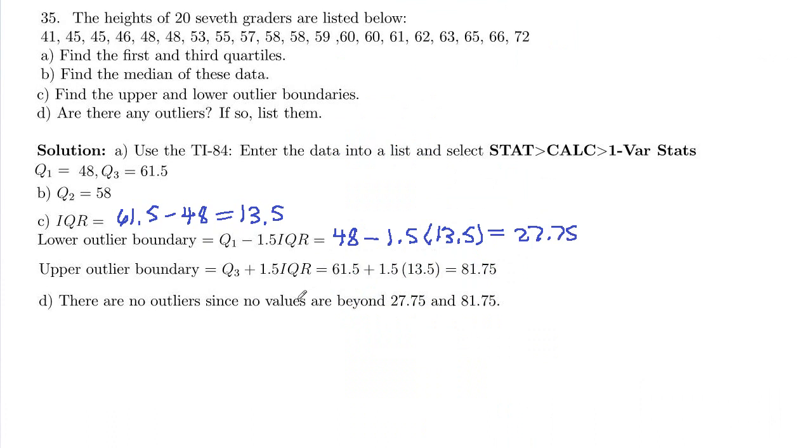And then similar for the upper, we do 61 plus 1.5 times 13.5. That gives us 81.75. So outliers are going to be any values less than 27.75 or greater than 81.75.